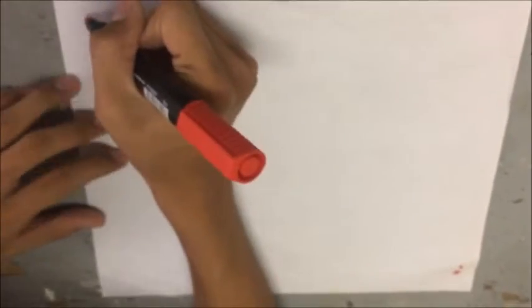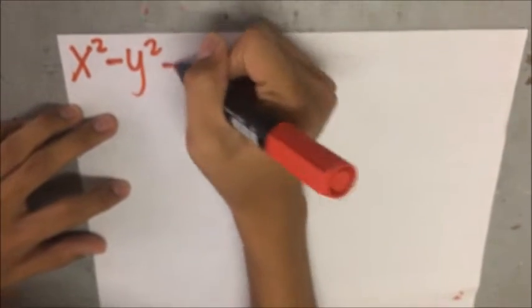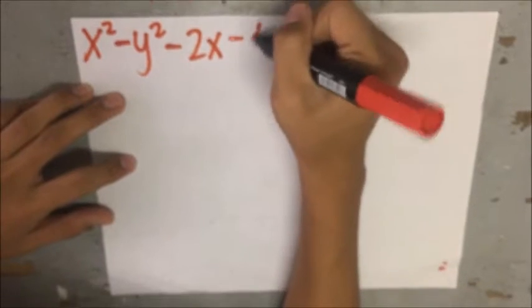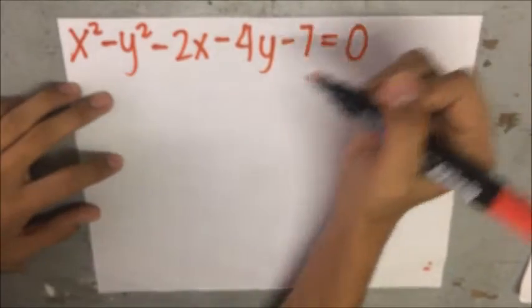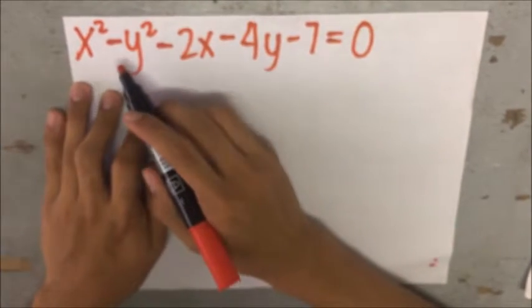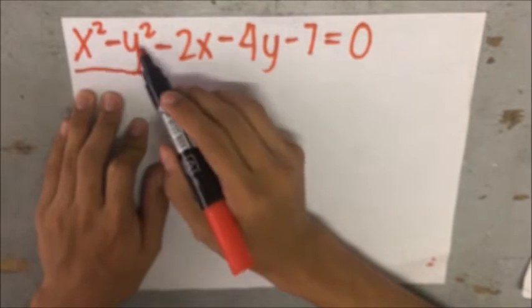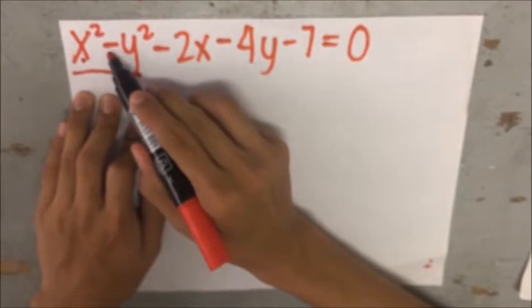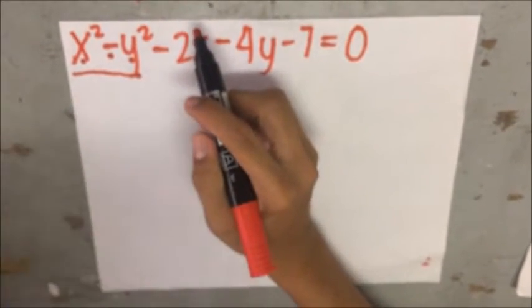Okay, given the equation x squared minus y squared minus 2x minus 4y minus 7 equals 0, we can already distinguish that this equation is a hyperbola by looking at the preceding variables, the x and y. When the x is being subtracted to y, this means that the equation is a hyperbola.